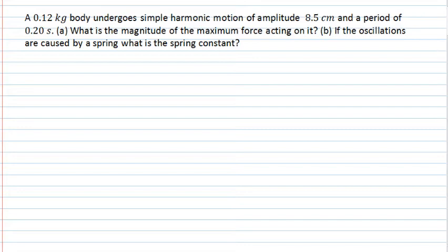An object is undergoing simple harmonic motion, and we're given some information about that object, such as its mass, the amplitude of oscillation, and the period of oscillation. We're asked to calculate the magnitude of the maximum force which acts on the object during its motion, and we're also asked to find what is the spring constant if the object which is oscillating is a mass on a spring.